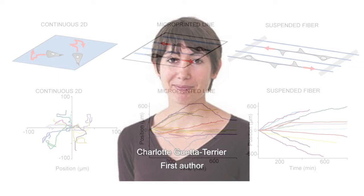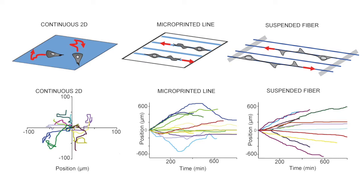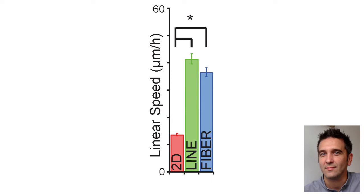The researchers, led by graduate student Charlotte Guetta-Therrier, compared the movement of fibroblasts on suspended nanofibers to their motility on 2D surfaces or on 1D micropatterned lines that have previously been shown to induce 3D modes of migration.